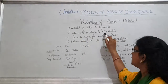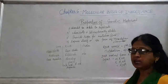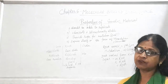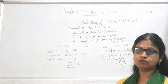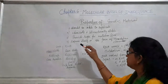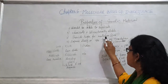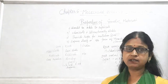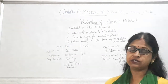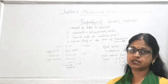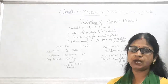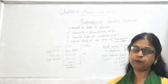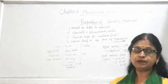The next property is that it should be chemically and structurally stable. That means it should not be highly reactive, so that its structure is stable and only then can it move from one generation to another. Third, it should provide scope for mutation — the sudden inheritable change. That material should undergo the process of mutation so that it can operate in the evolution process.